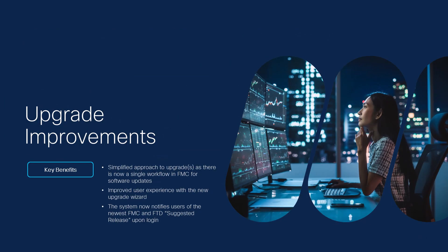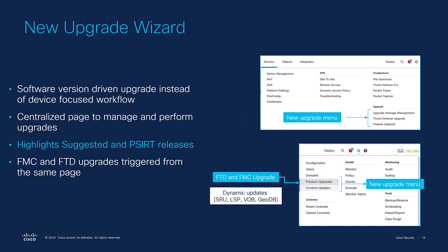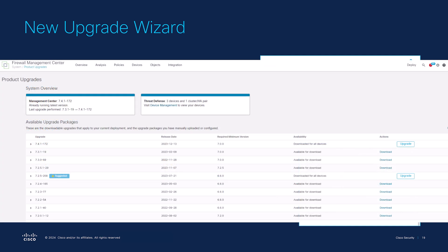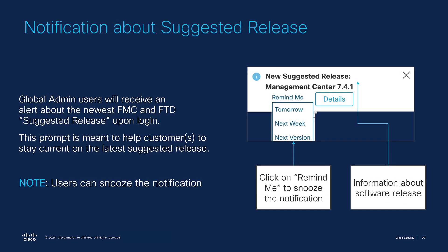Next up, we have upgrade improvements. Previously, there were two workflows for product or software upgrades via system updates or device management and upgrade. These workflows didn't have similar functionality, which caused customers to complain about various difficulties in performing upgrades. As of 7.4.1, there is now a centralized page to manage and perform upgrades, an upgrade wizard, and FMC and FTD upgrades are triggered from the same page. Also, to ensure customers stay on the latest suggested release, the system now notifies users of the newest FMC and FTD suggested release upon login.